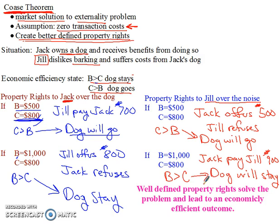So here's the point: no matter what the benefits and costs are, and no matter who gets private property rights, the most economically efficient thing will still happen. Well-defined private property rights — this is the Coasean idea — solve the problem and lead to an economically efficient outcome. In every case we got the efficient outcome without taxes and without subsidies. All we had to do was clearly define private property rights and let the market work.